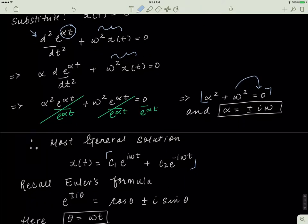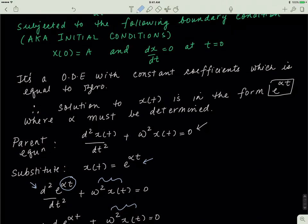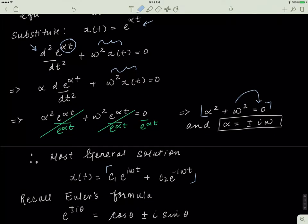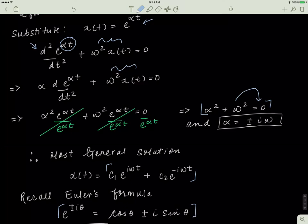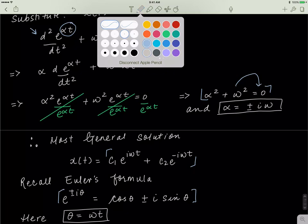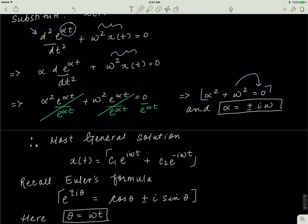The initial conditions were: x at 0 equals a, and the rate of change of x equals 0 when t equals 0. I want to remind you quickly that Euler's formula is a way that helps us convert Cartesian coordinates to polar coordinates. Euler's formula is this expression over here. We'll be working with Euler's formula a lot, and you have to remember that theta here is equal to omega·t.